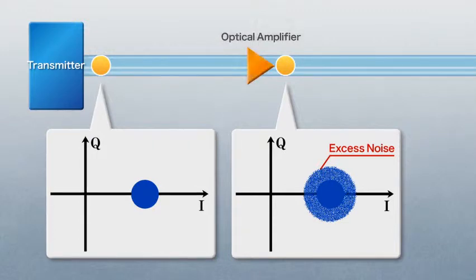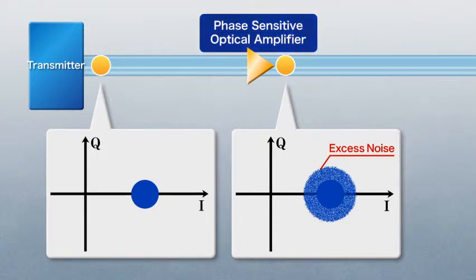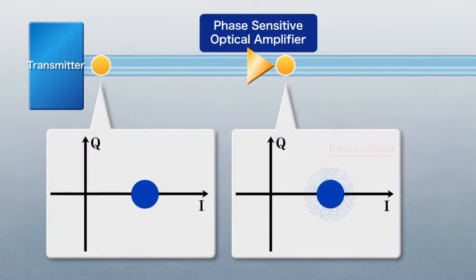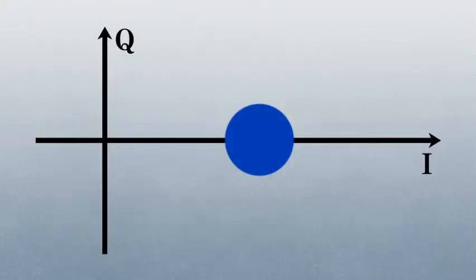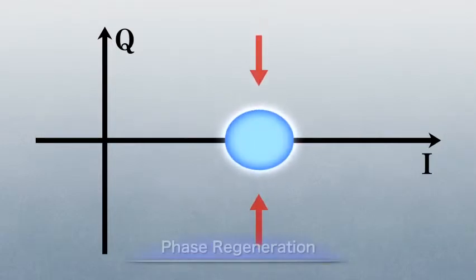In contrast, a phase-sensitive optical amplifier using PPLN does not generate excess noise in principle. This amplifier also has a phase-squeezing property, which helps to reduce the distribution of the optical signal.